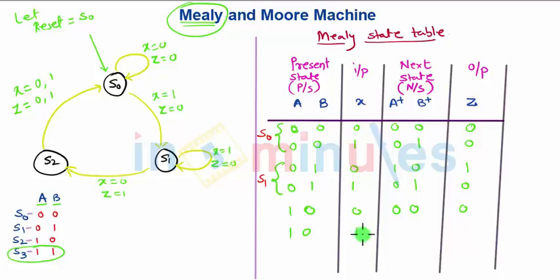And for the next input, X equals 1, again it will go to S0 state that is 0, 0. But this time the output is 1.